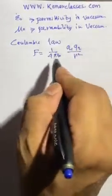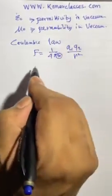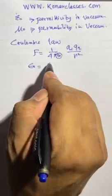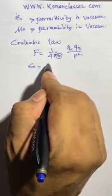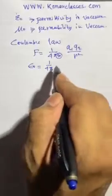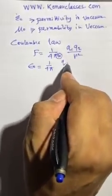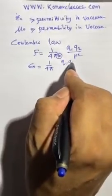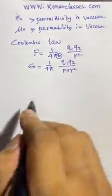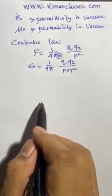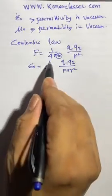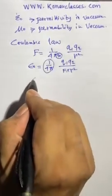From this equation we get epsilon naught. So epsilon naught equals 1 by 4 pi, and we will put that equation and see how the dimensions come from F into r square. Now 1 by 4 pi is a constant, we all know that.